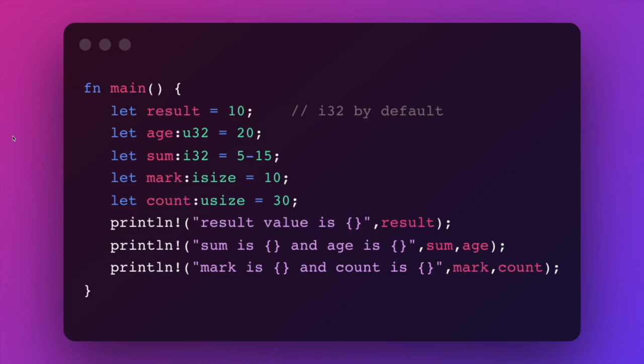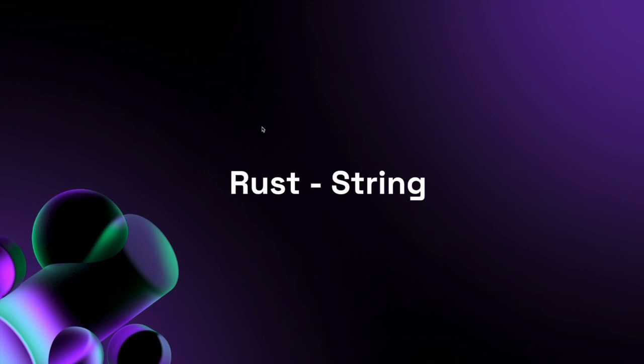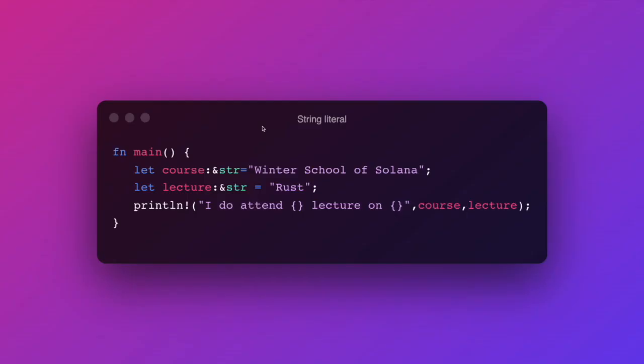We can also manually specify data types when defining a variable. All the standard variable types from other programming languages are available: signed and unsigned integers, floating point types, booleans, characters, and strings. But let's talk specifically about strings, as they deserve special attention in Rust.